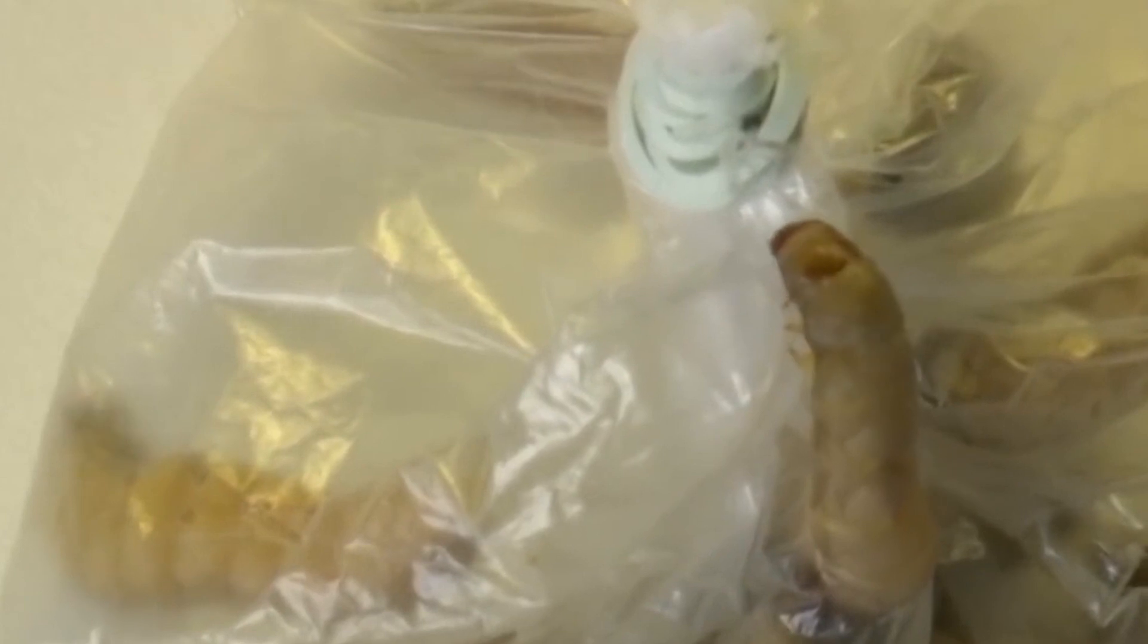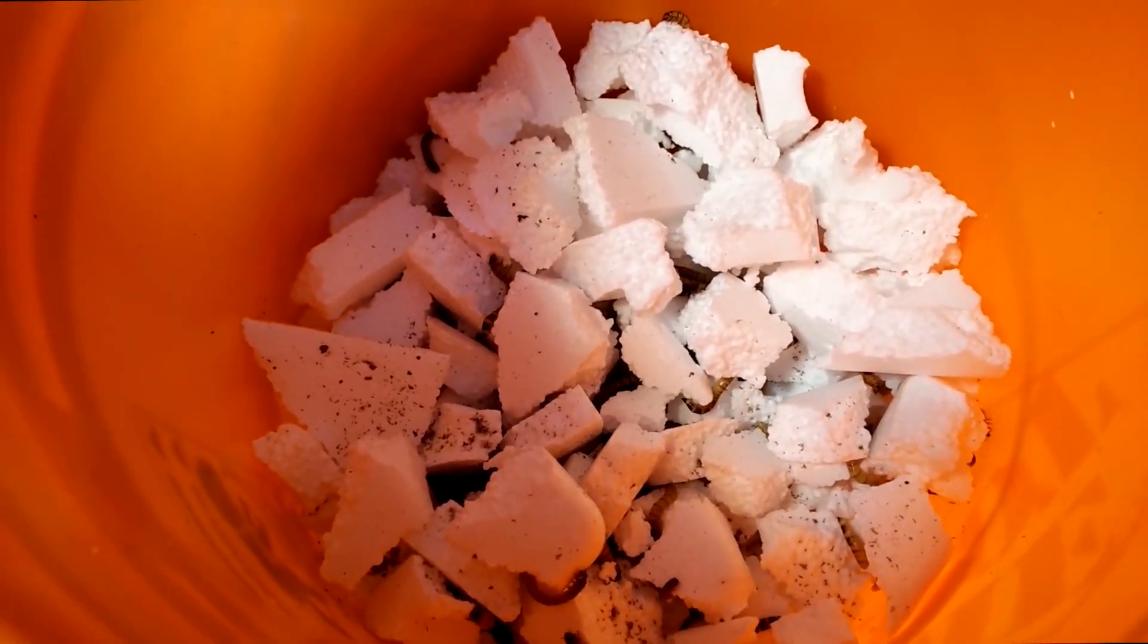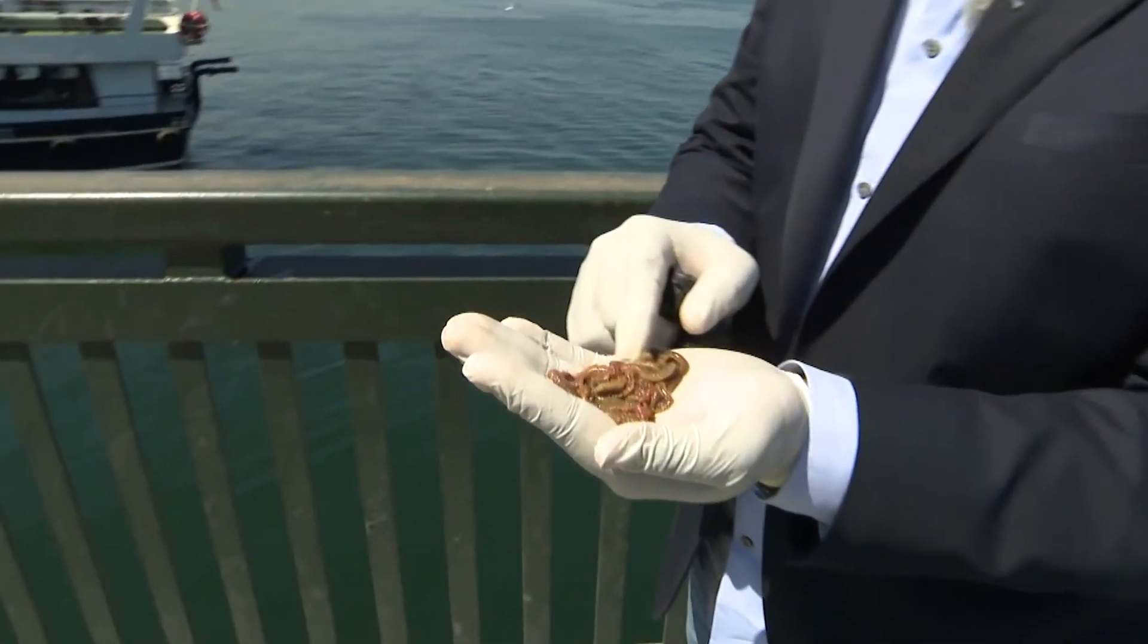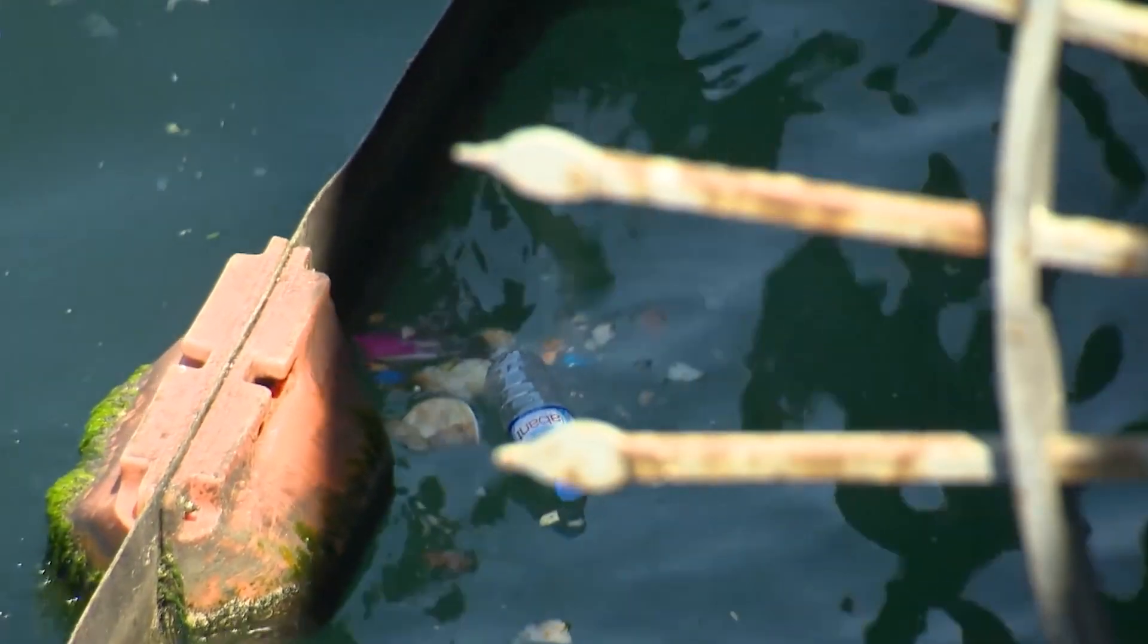In the research, each worm created an average of 2.2 holes per hour. Overnight, 100 wax worms degraded 92mg of plastic shopping bag. At this rate, it would take these same 100 worms nearly a month to completely break down an average 5.5g plastic bag. The goal is to figure out the mechanism inside the worm's gut that allows such efficient breakdown of plastic so that they can use this information to design better tools to eliminate plastics from our environment.